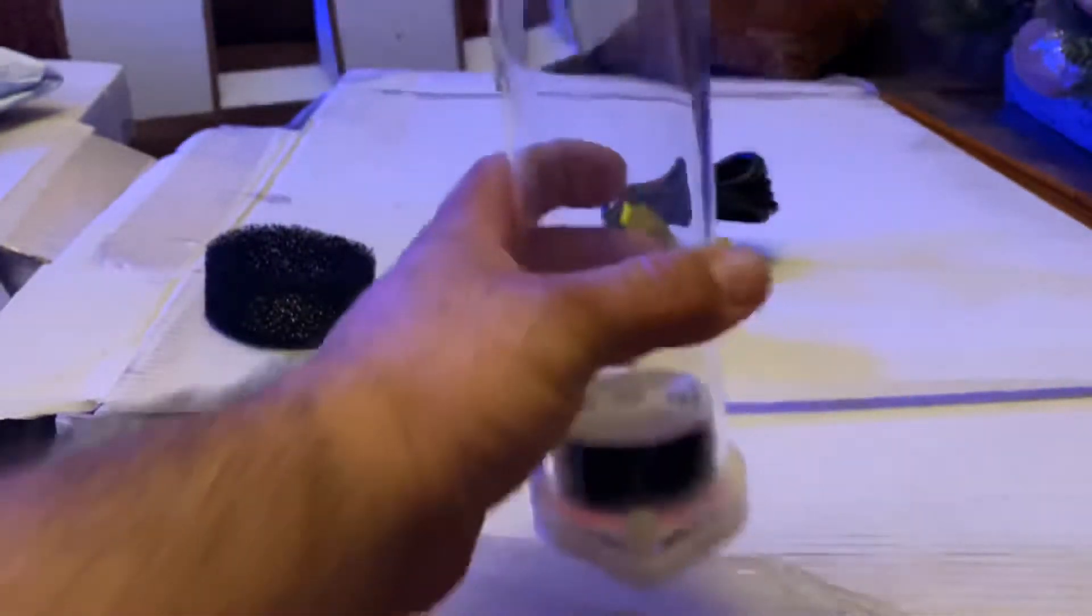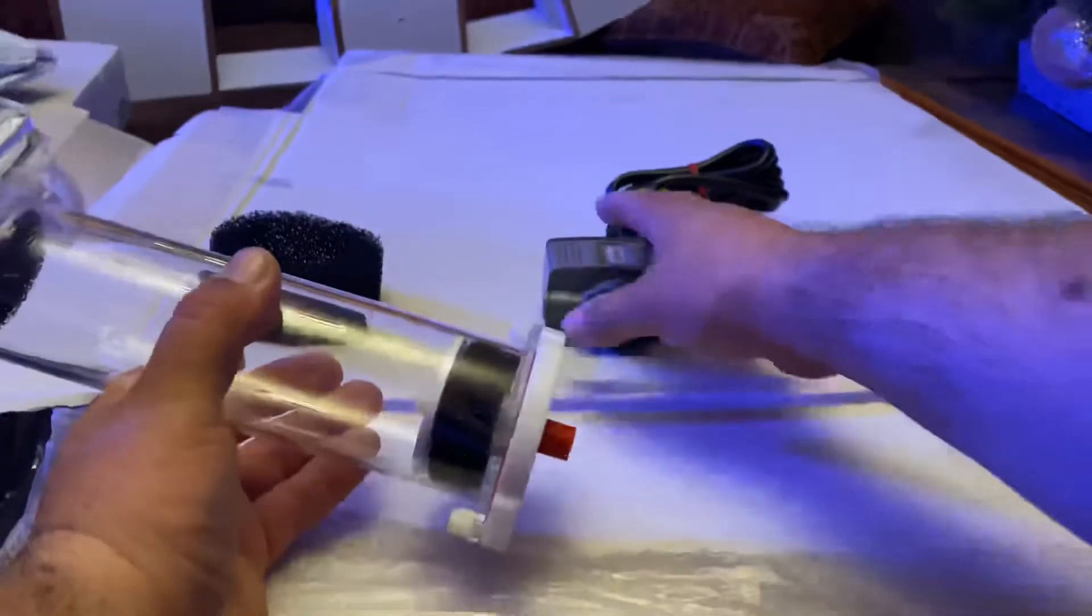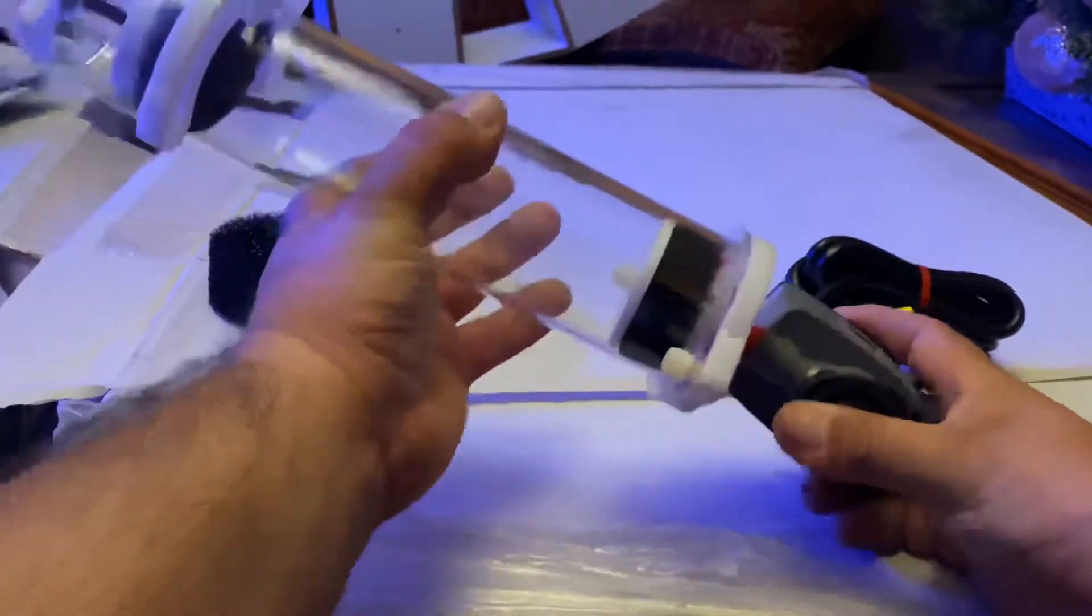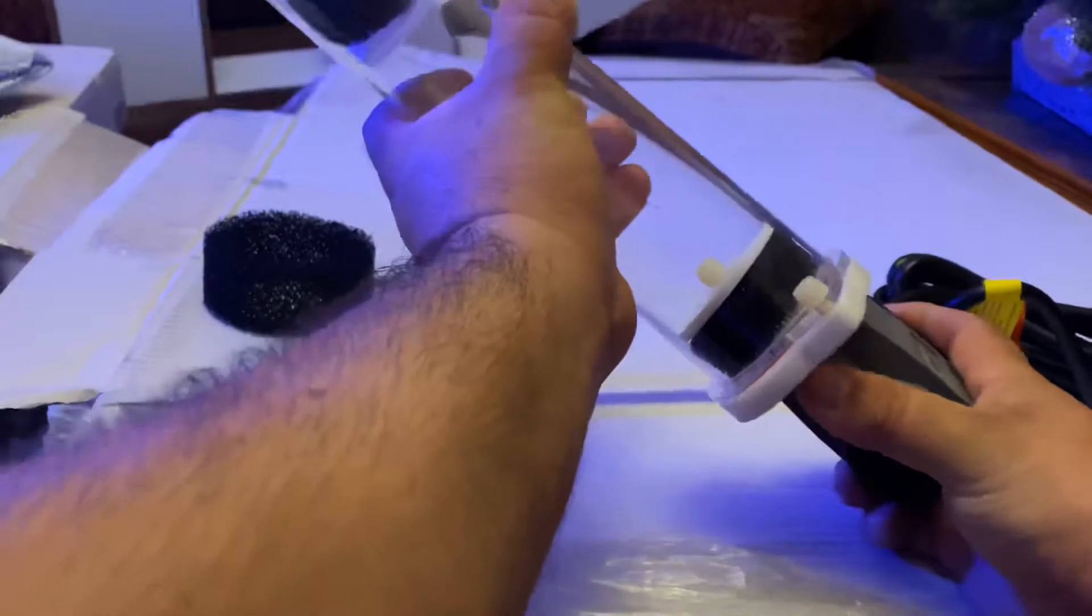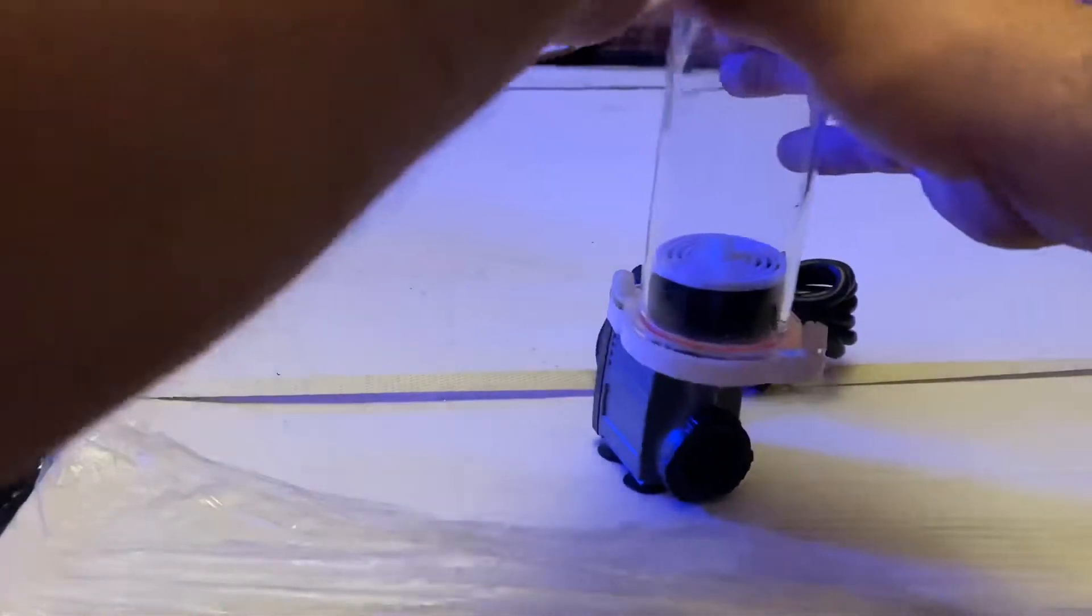It's pretty nice. So this is a hang-on type. It's nice for nano, smaller tanks, or if you don't have that much space, it's perfect. Pretty straightforward - it goes at the bottom, sucks the water, tumbles, and then it exits to here. Then you got the filter and then you got this. Pretty nice.